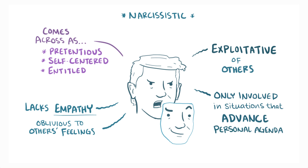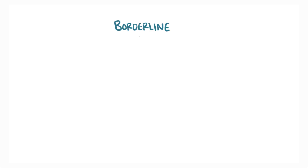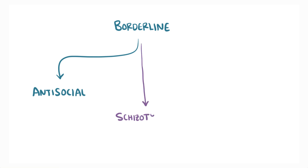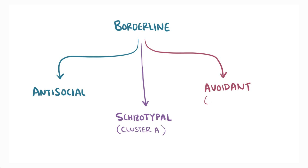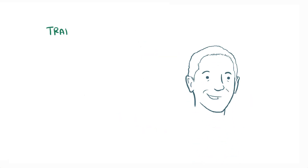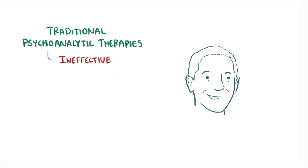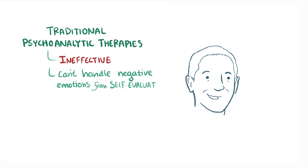There's a considerable overlap between personality disorders. For example, people with Borderline Personality Disorder might also meet the diagnostic criteria for Antisocial Personality Disorder, as well as Schizotypal Personality Disorder and Avoidant Personality Disorder, which are parts of cluster A and cluster C, respectively. In general, traditional psychoanalytic therapies are ineffective for cluster B personality disorders, since people with this disorder often can't handle the strong negative emotions that come with challenges to one's self-evaluation.